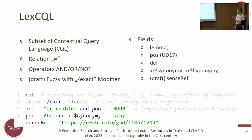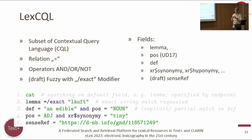The fields we want to support include: lemma (entry name), part-of-speech information, definition as a description field from TEI LexO, and semantic relation fields like synonymy and hyponymy. Currently still in draft are sense references — references to senses defined in a dictionary — and normative data like the GND, which can be used to link different results to one common sense and aggregate different information types.